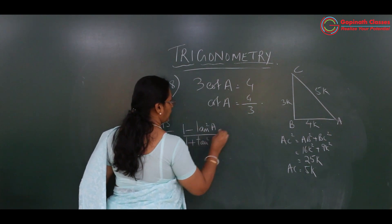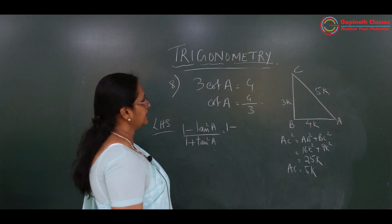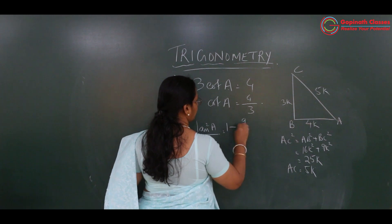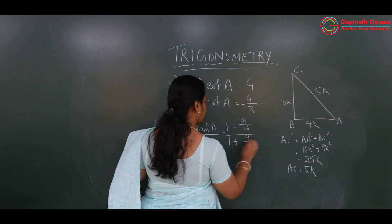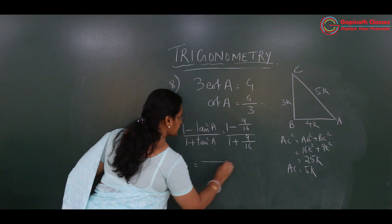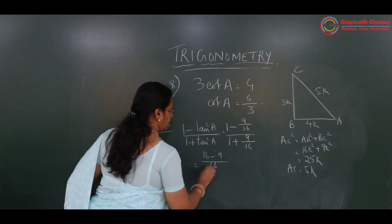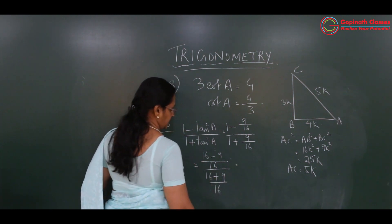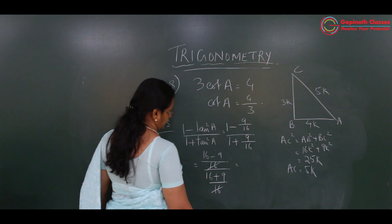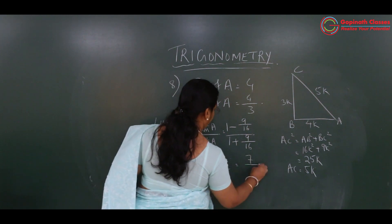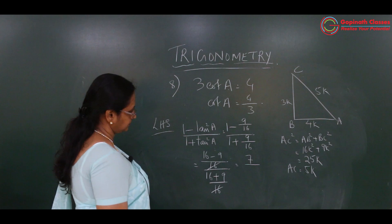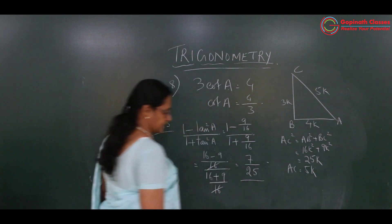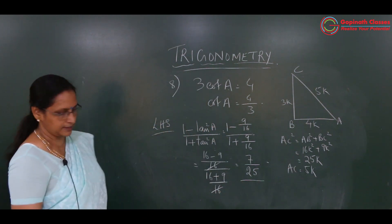Substituting values: tan A is 3 by 4, so 1 minus (3 by 4) square upon 1 plus (3 by 4) square. That is 1 minus 9 by 16 upon 1 plus 9 by 16. Taking LCM of 16: (16 minus 9) upon (16 plus 9), which gives 7 upon 25. So LHS equals 7 upon 25.